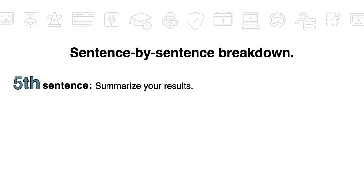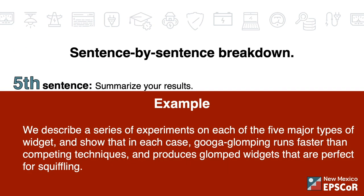Fifth sentence: summarize what you found out. For example: 'We describe a series of experiments on each of the five major types of widgets and show that in each case, Guga Glomping runs faster than competing techniques and produces glomped widgets that are perfect for squiffling.'